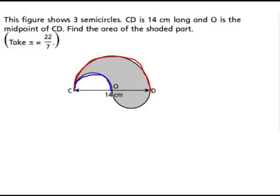The third one would be here. And if you see from C to O, CO and OD semicircles are equal.